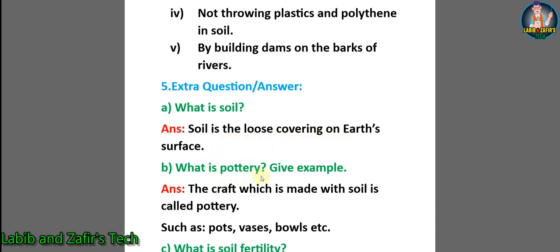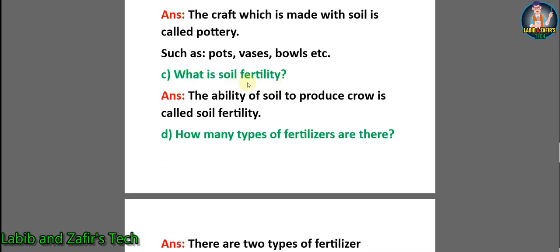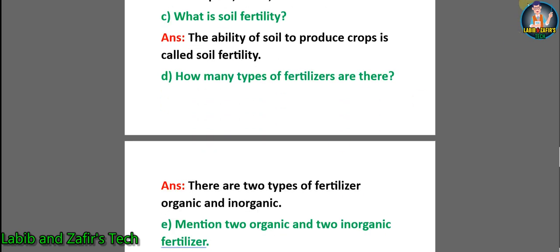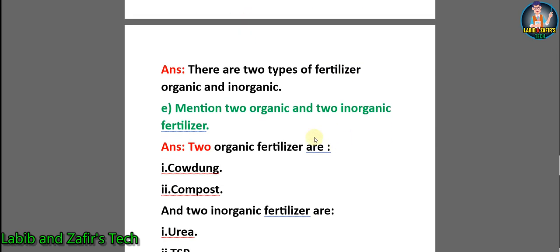B: what is pottery? Give an example. Answer: the craft which is made with soil is called pottery, such as pots, vases, bowls, etc. C: what is soil fertility? Answer: the ability of soil to produce crops is called soil fertility. D: how many types of fertilizers are there? Answer: there are two types of fertilizers — organic and inorganic.